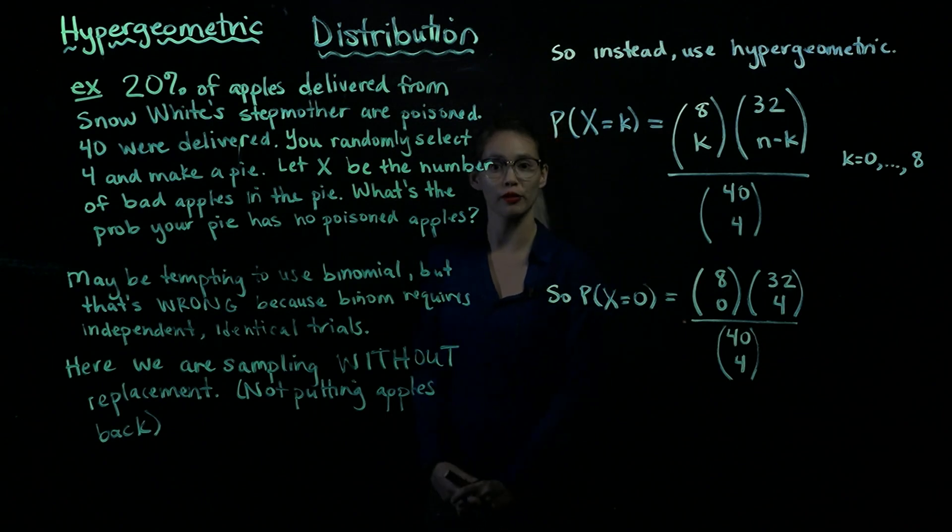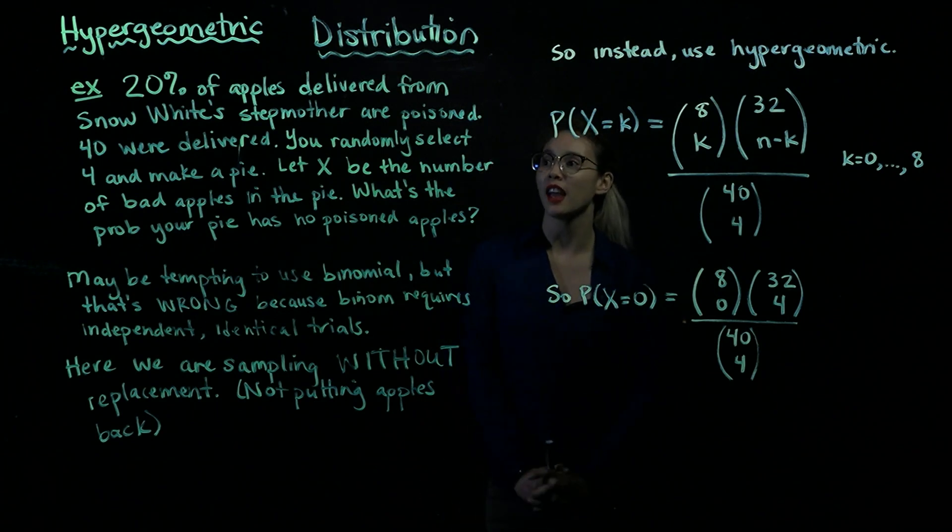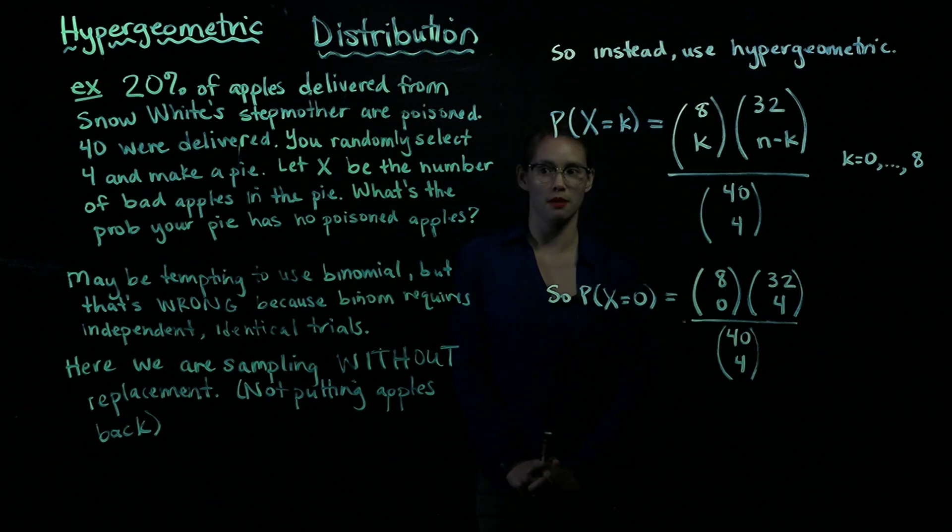So imagine that you're friends with Snow White and you're over at her house when her stepmother drops by with 40 apples and 20% of these apples are poisoned. You and Snow White randomly select four of these apples and make a pie. What's the probability that your pie has no poisoned apple?